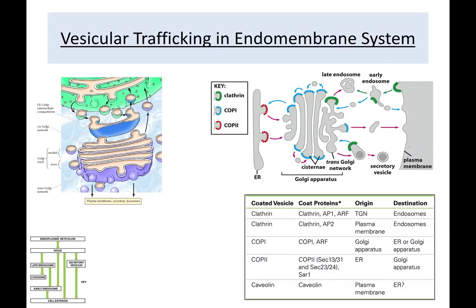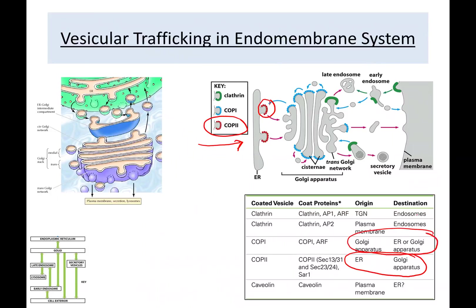Vesicles are coated with specific proteins called coating proteins. COP2 coats vesicles going in the forward direction from ER to Golgi. COP1 coats vesicles going in the backward direction from Golgi back to ER. If vesicles are going from Golgi to endosomes, or from the plasma membrane to endosomes, they are coated with clathrin. There is another recently discovered protein called caveolin, though its role has not been fully confirmed — it may coat vesicles going from the plasma membrane back to the ER.